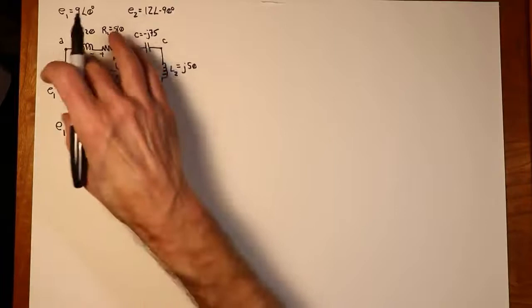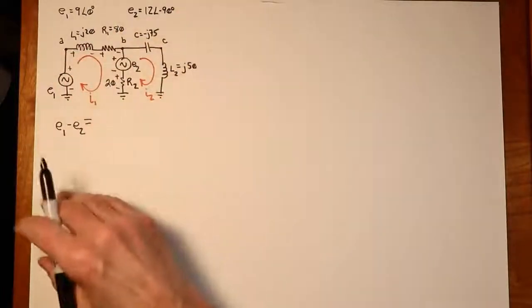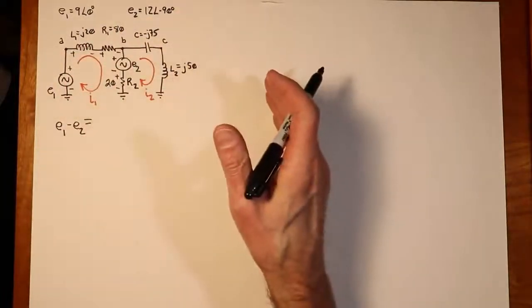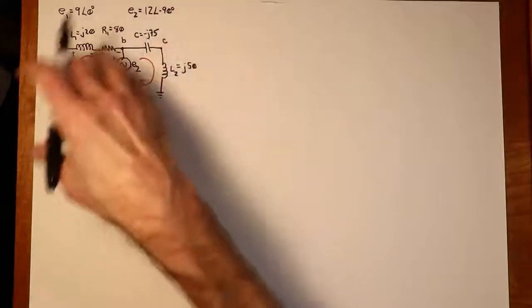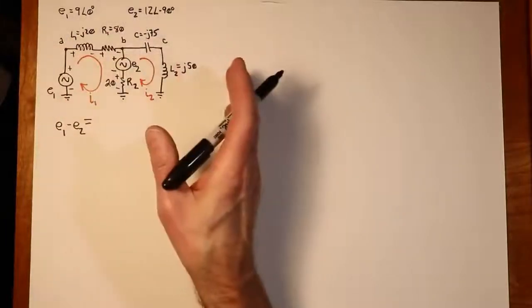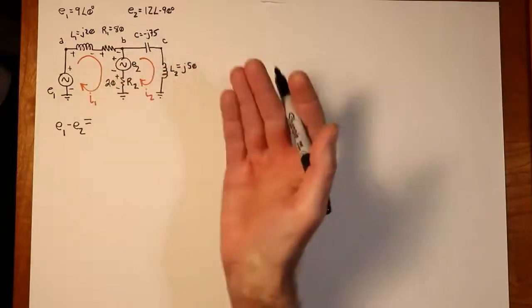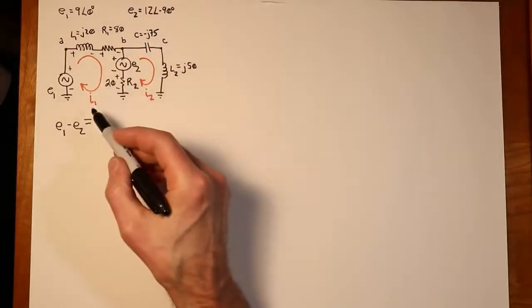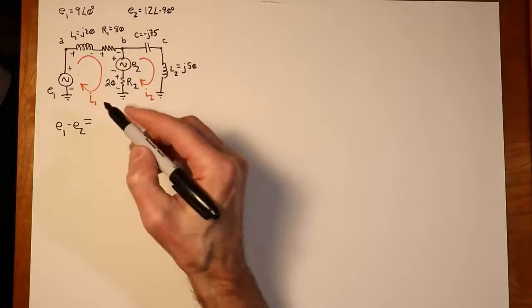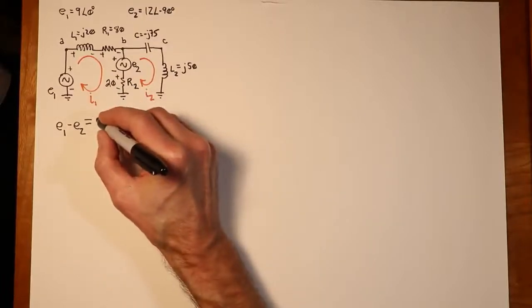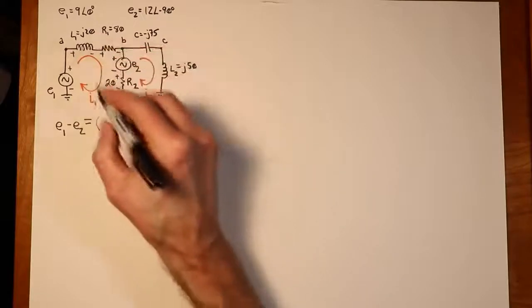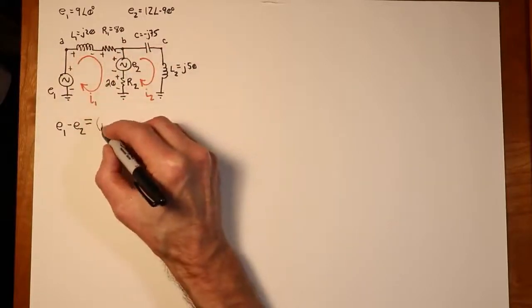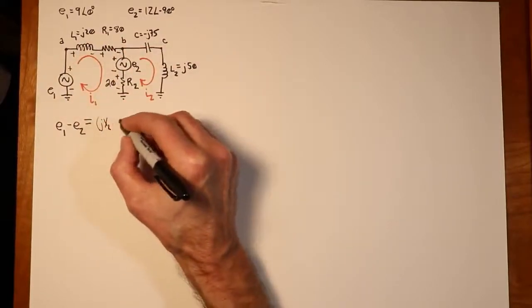Now we can write those in terms of their Ohm's law equivalents. So what do we see over here for the first couple of components, L1 and R1? Well, the only current that's passing through there would be I1. So we can say basically that I1 is passing through XL1 and R1.